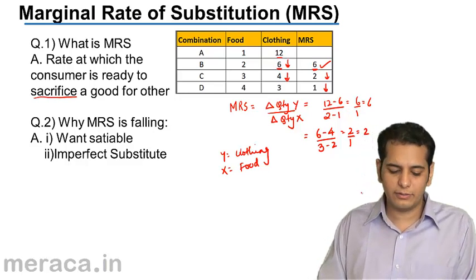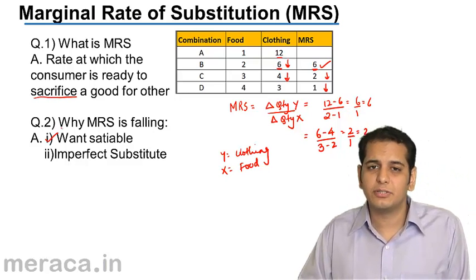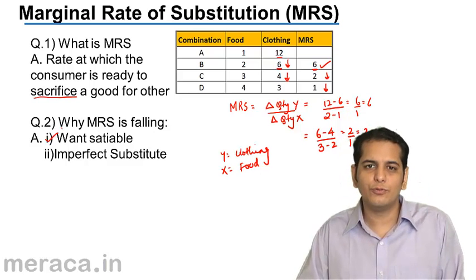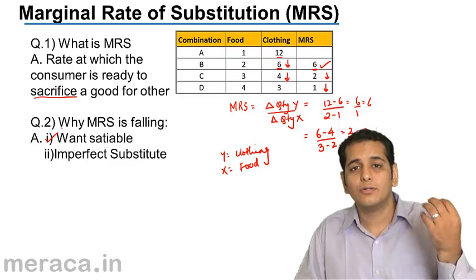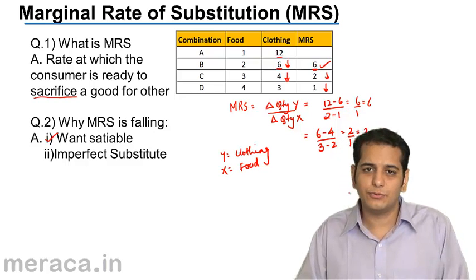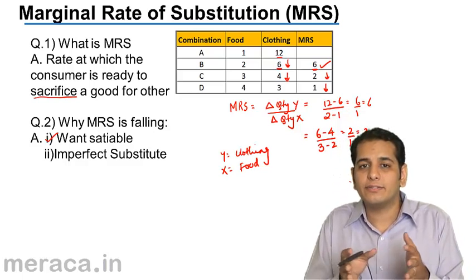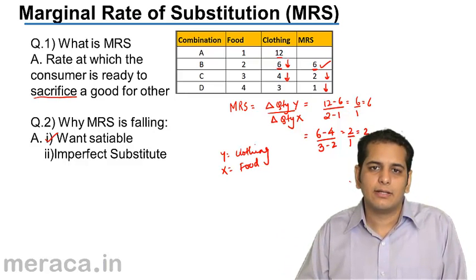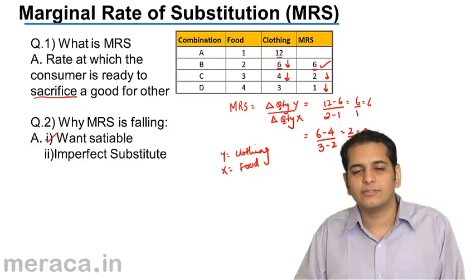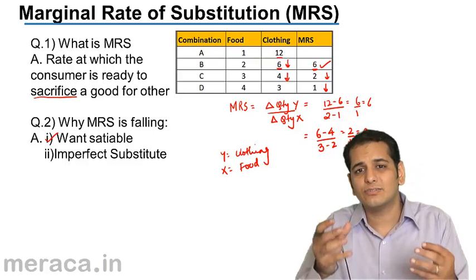Why do you think is it falling? It falls because first, the want is satiable. That is, when the consumer has only one unit of food, he is keen to part with clothing to have one more unit of food because he has fewer units of food. But as he goes on having more and more food, his want tends to get satisfied. And as his want gets satisfied, he will be willing to have less food, and since he is willing to have less food, he will be ready to sacrifice less of clothing.